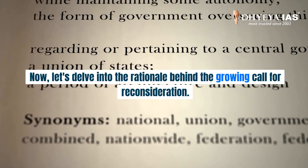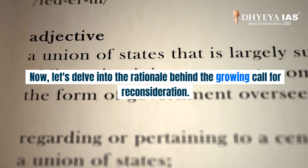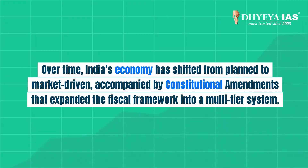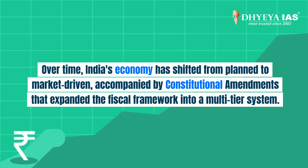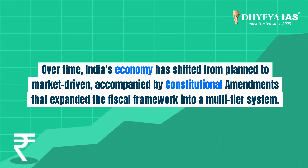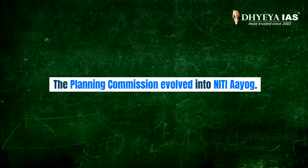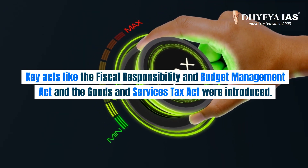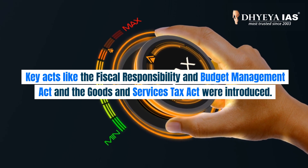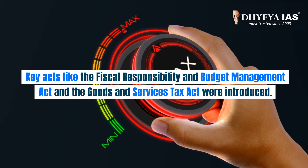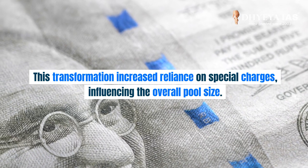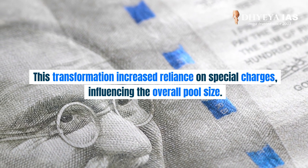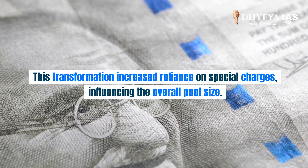Now let's delve into the rationale behind the growing call for reconsideration. Over time, India's economy has shifted from planned to market-driven, accompanied by constitutional amendments that expanded the fiscal framework into a multi-tier system. The Planning Commission evolved into NITI Aayog, and key acts like the Fiscal Responsibility and Budget Management Act and the Goods and Services Tax Act were introduced. This transformation increased reliance on special charges, influencing the overall pool size.